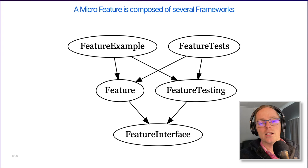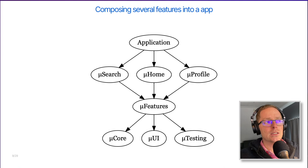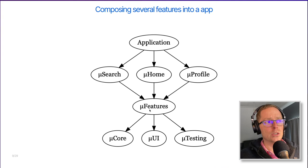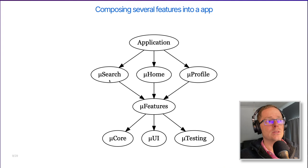If you compose several features together, you get a cluster of feature frameworks. You have your application target at the top. It has a micro search feature, a micro home feature, and a micro profile feature. You can imagine that micro search implements anything related to searching within your app; the home feature is the screen people land on when they launch your app; and the profile feature could be the screens related to configuring user settings. Those build on top of a central core features framework, which is built on top of a core UI and testing framework. You can also have a networking framework or something similar. These are more like the nuts and bolts at the bottom, and the level above that is the features — things the user does with your app — while the bottom layer covers what you need on a technical level to implement those features.